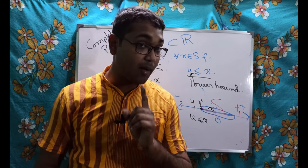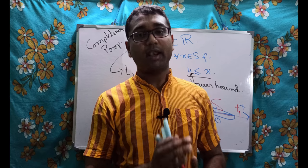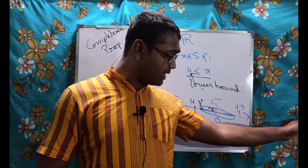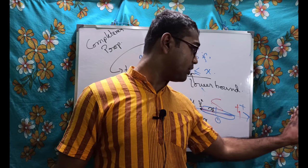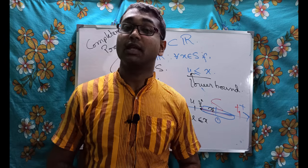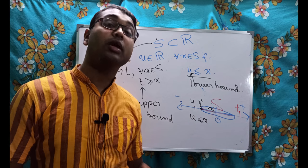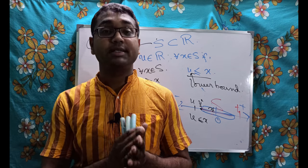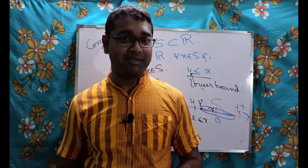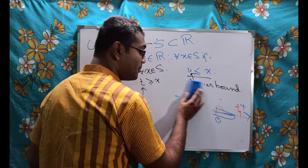Now, when a set has an upper bound - see, if a set has an upper bound, then it can have infinite number of upper bounds. Why? Because if T is an upper bound, then all the elements of real number from here onwards will be upper bounds of S. So if a set has an upper bound, then it is called bounded above. If a set has a lower bound, then it is called bounded below. If a set has both of them, then it is called a bounded set.